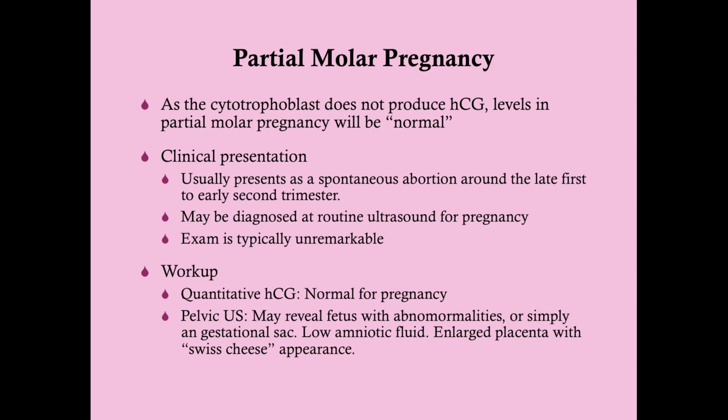It may be diagnosed at a routine ultrasound if the patient has not spontaneously aborted yet, in which case you will see some hydropic chorionic villi along with a fetus — either dead or alive. Physical examination is typically unremarkable; one finding may be a uterus small for dates. For workup, a quantitative HCG will help differentiate this from a complete molar pregnancy — it will be normal for pregnancy. Pelvic sonography is really how you diagnose partial molar pregnancy: it will reveal a fetus with abnormalities or an empty gestational sac, low amniotic fluid, and an enlarged placenta with a Swiss cheese-like appearance caused by the hydropic chorionic villi.